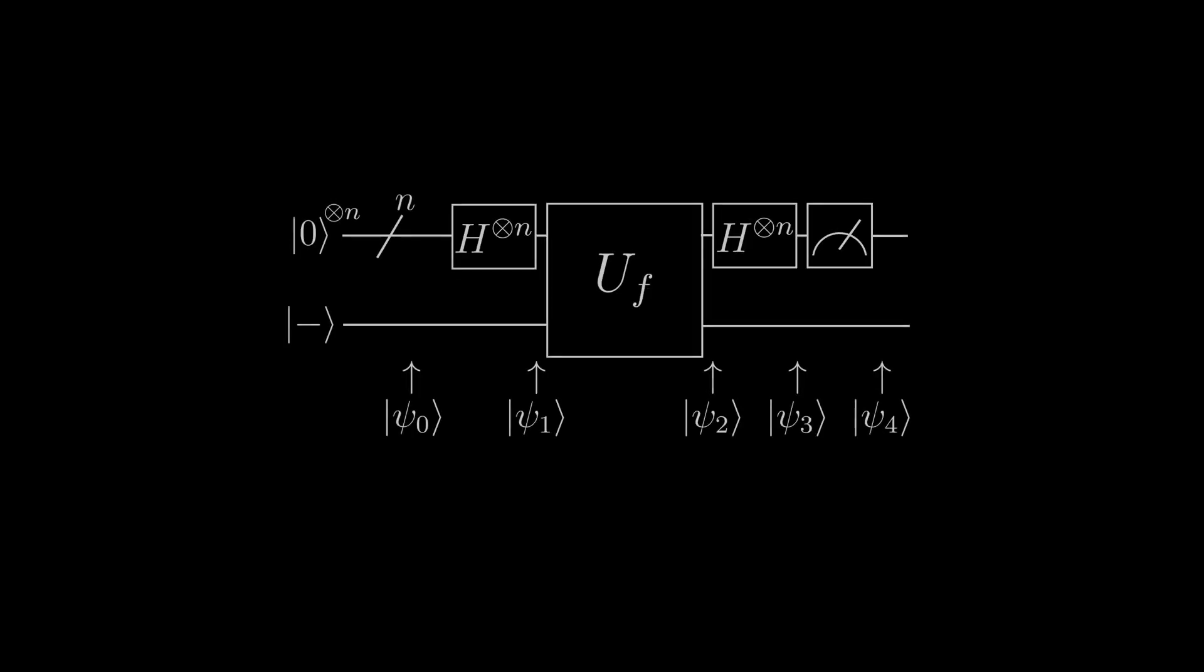If we look at the circuit, it may look familiar. It's the same circuit as the Deutsch-Josza algorithm, just with a different function being applied to the qubits.